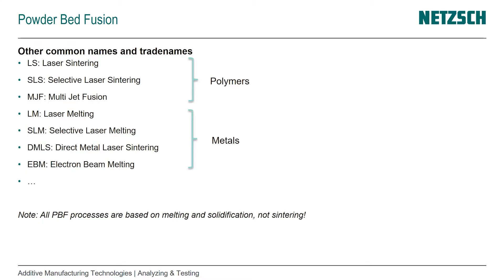We'll talk about some common names and trade names in powder bed fusion processes, because there are a couple of traps hidden here. There are differences between polymer and metals. Powder bed fusion comprises both polymer powders and metal powders. For polymers: LS or laser sintering, SLS (selective laser sintering) — probably the most common term when 'powder bed fusion' isn't used — and MJF (multi-jet fusion), a newer process that doesn't use a laser heat source.